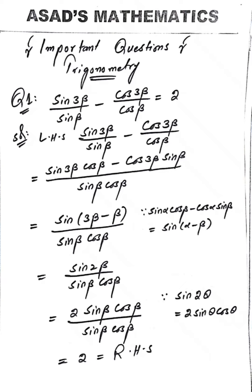The first question is: sin 3β divided by sin β minus cos 3β divided by cos β equals 2.